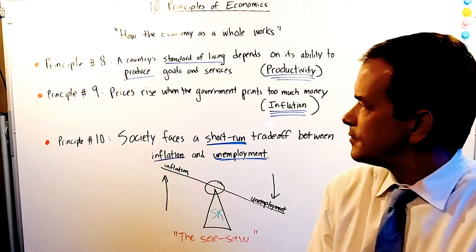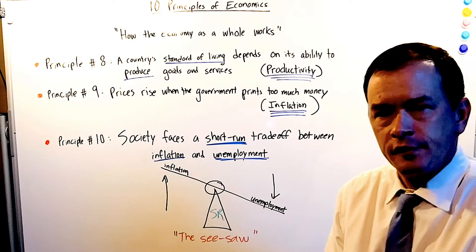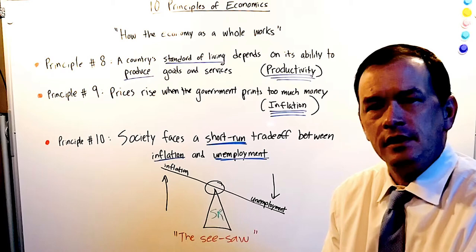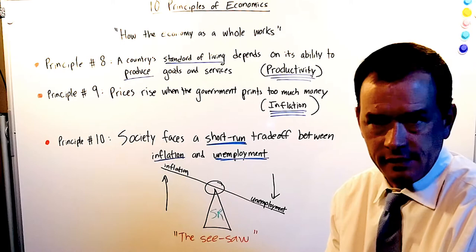Alright, so back to the principles. How the economy is affected as a whole, as it works as a whole. Principle number eight: A country's standard of living depends on its ability to produce goods and services. Your productivity. If you're blessed, and if you're watching this from the United States or another world power, you're blessed to live in a country that's highly productive. Your standard of living is much higher because of it.